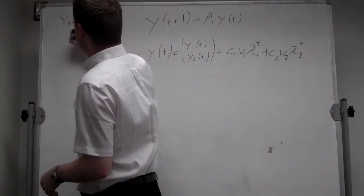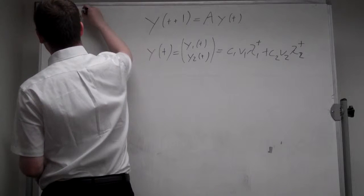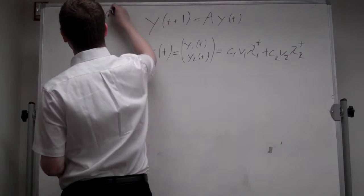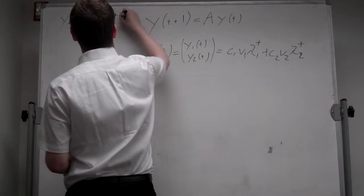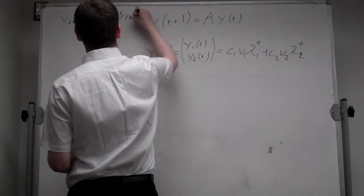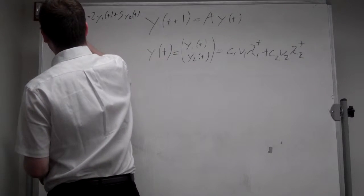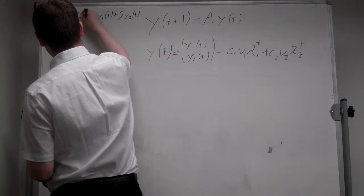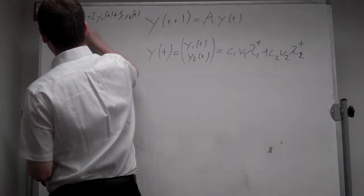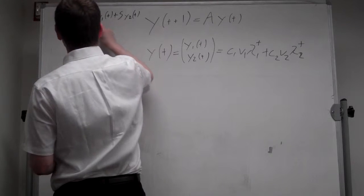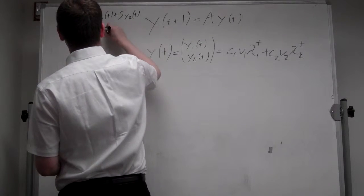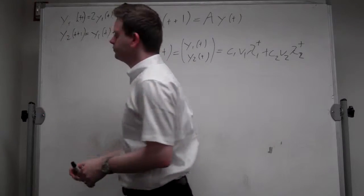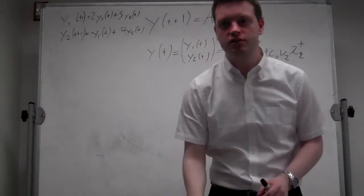y_1t+1 is equal to 2y_1t plus 5y_2t and y_2t+1 is equal to y_1t plus 4y_2t. Okay, so let's assume we have this system.